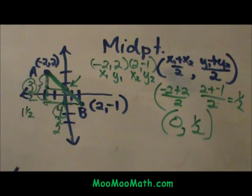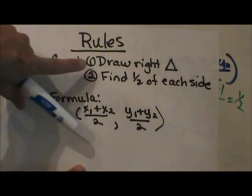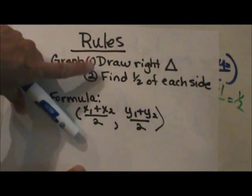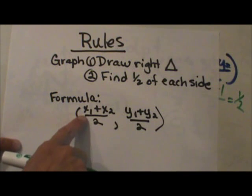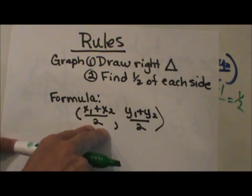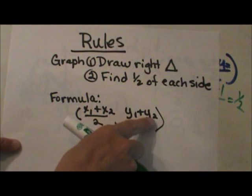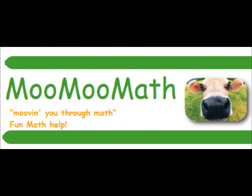So let's look at the rules of midpoint. We have two methods. Graphing: Draw your right triangle. Then find half of each side. Then you just connect those back to see exactly where that point is. Or the formula. We did x1 plus x2 divided by 2. So you average the two x coordinates. Y1 plus y2. Add those two together to get the y coordinates. Hope this was helpful.